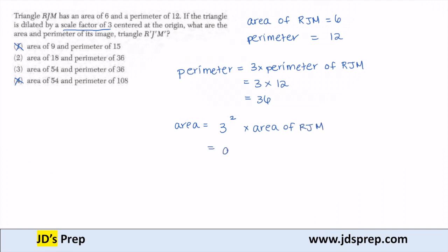And 3 squared is 9, times our original area, which was 6. So the area of the new triangle is 54, which means the answer here is number 3.